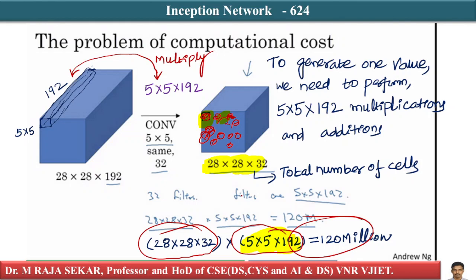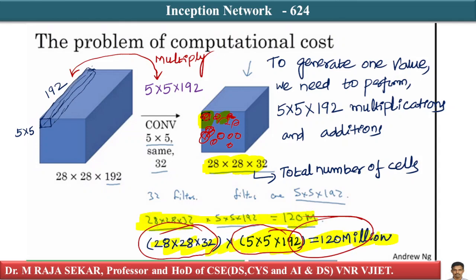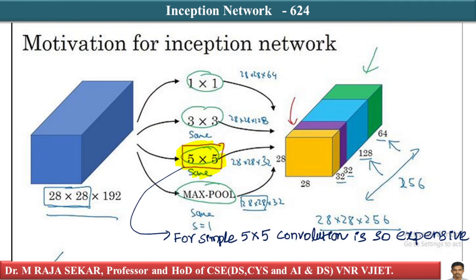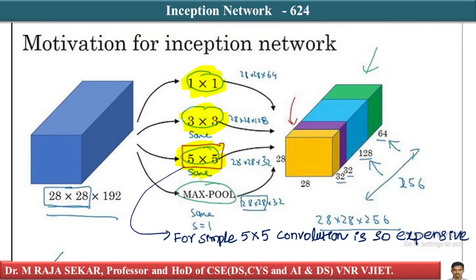This is a massive number of computations — about 120 million — just for one simple 5×5 convolution. And in an inception network, I have to do multiple convolutions: 1×1, 3×3, and 5×5. So for just one layer we already have over 100 million computations.